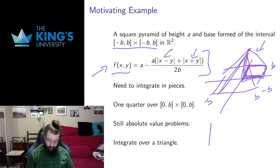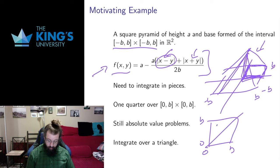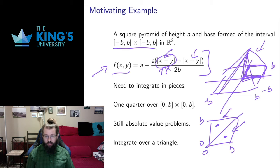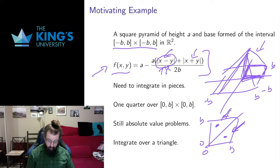This remaining absolute value is still a problem, because in the square from 0 to b and from 0 to b, this absolute value term depends on whether I'm in one triangle or the other. In one triangle y is larger, so I'd have to multiply by negative 1. In the other triangle x is larger, so I'd just drop the absolute value sign. By symmetry I can do this in two pieces, but then I'd have to integrate over a triangle as opposed to a square. I can't get anywhere with this problem unless I go to integrating over triangles.